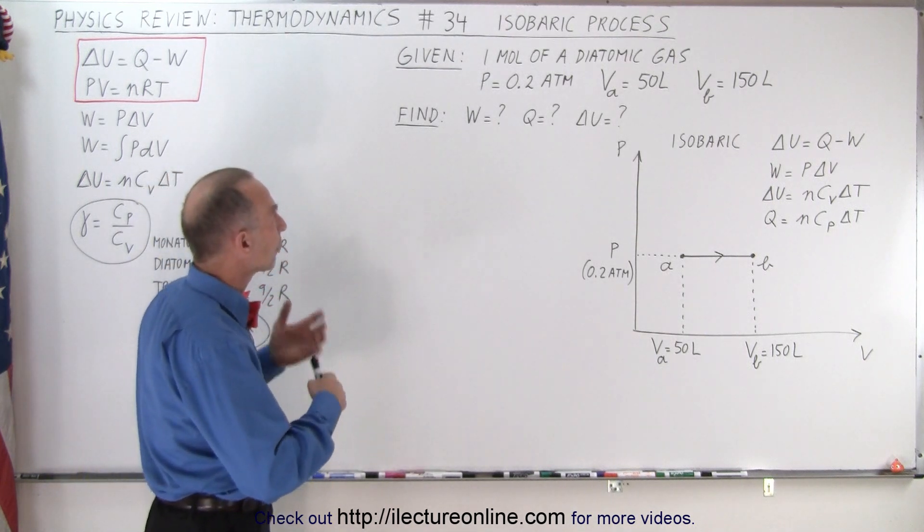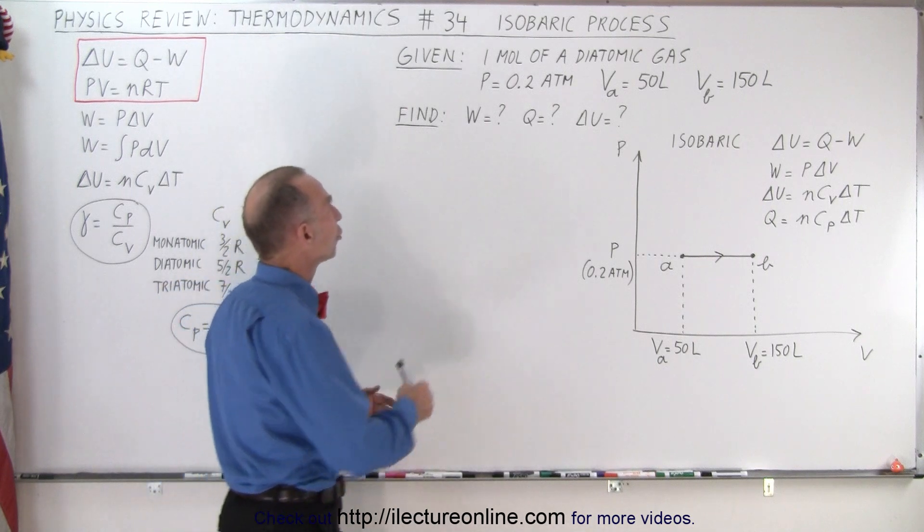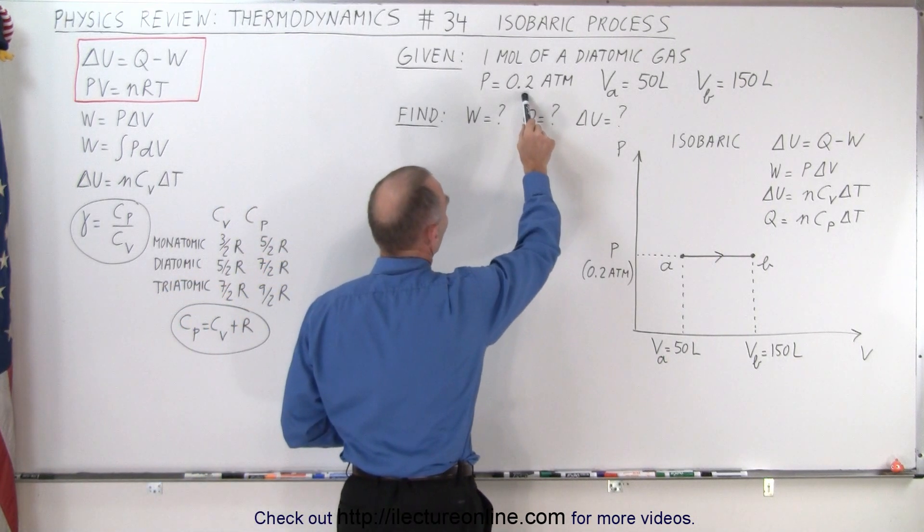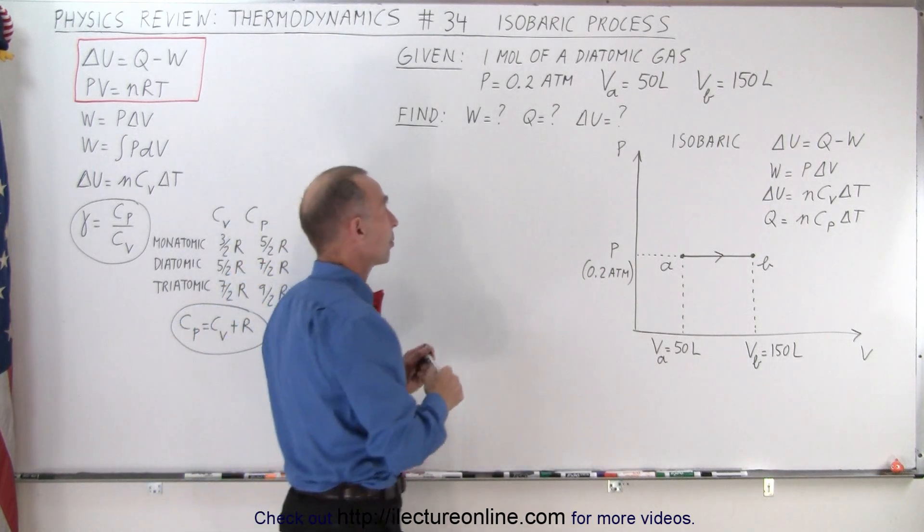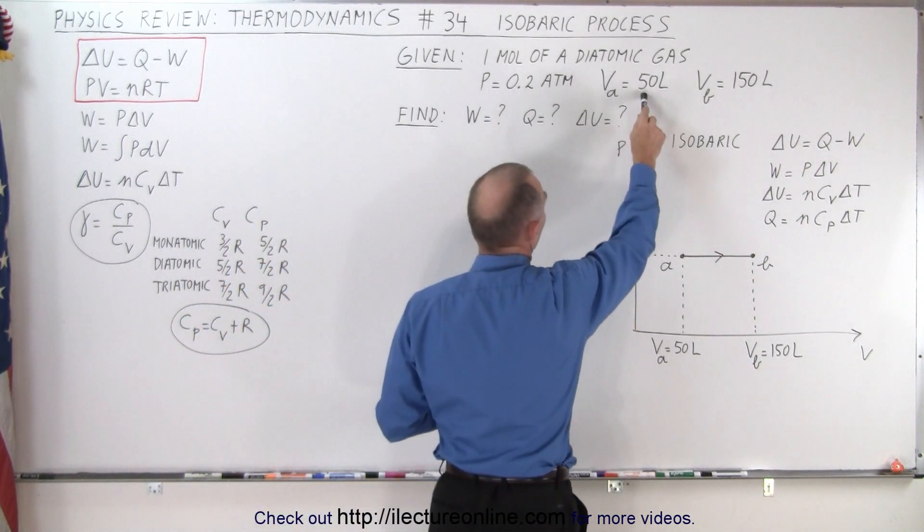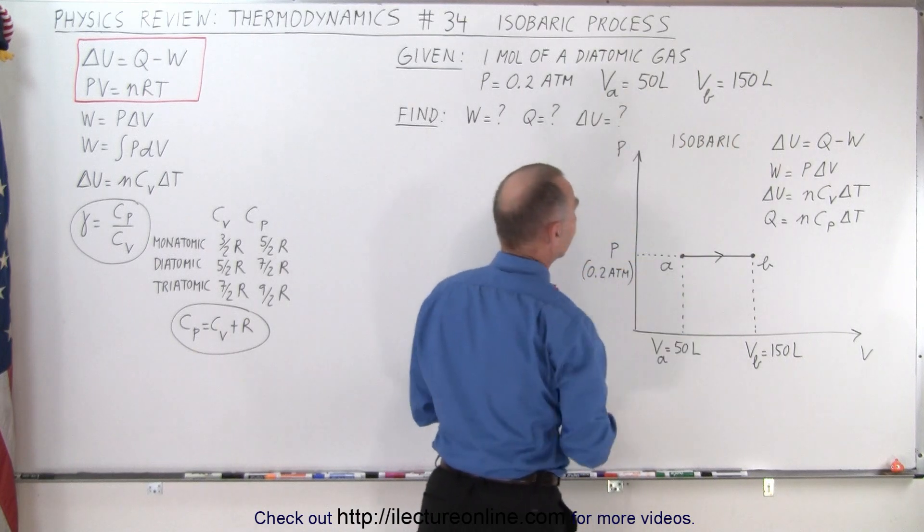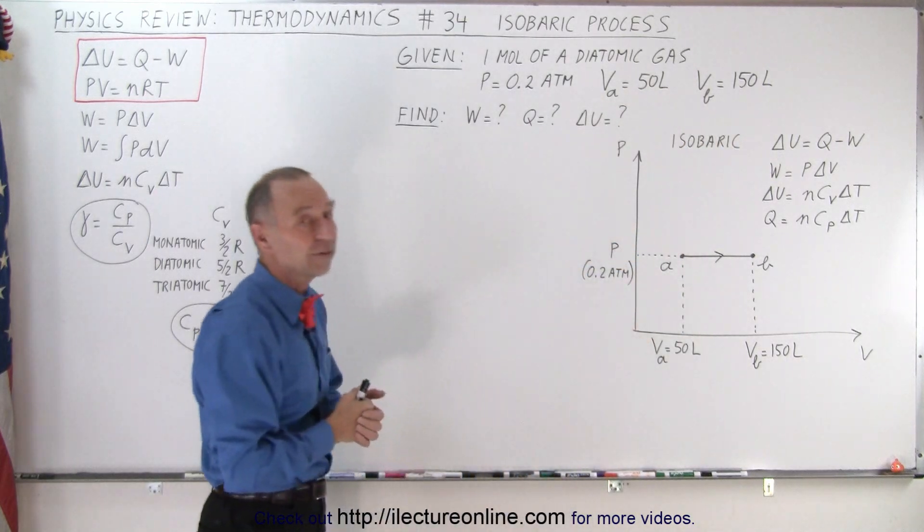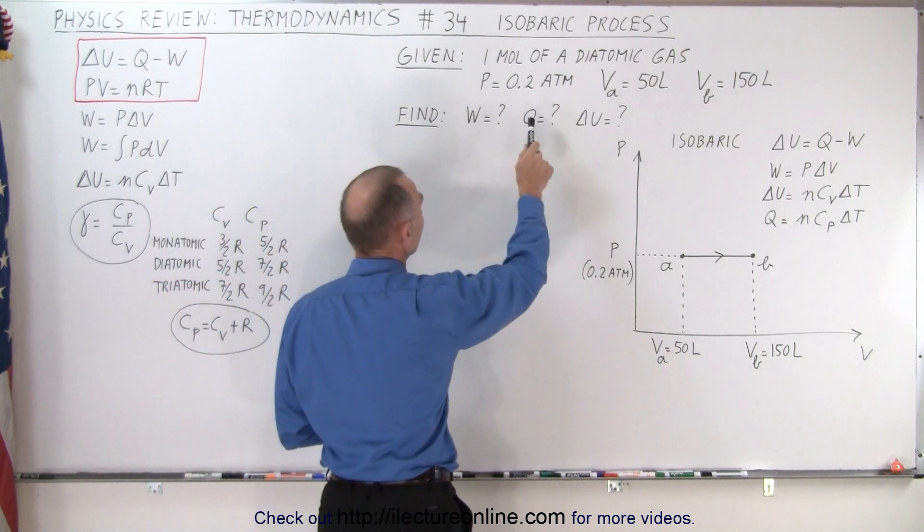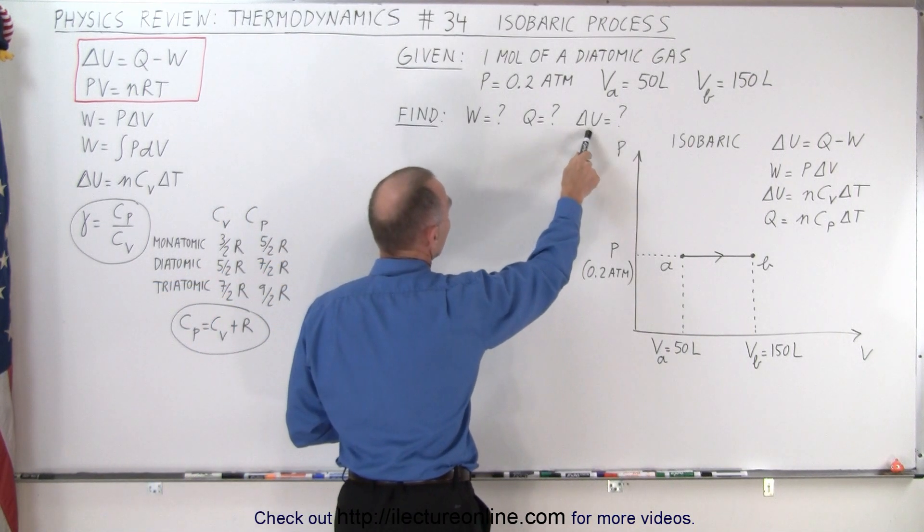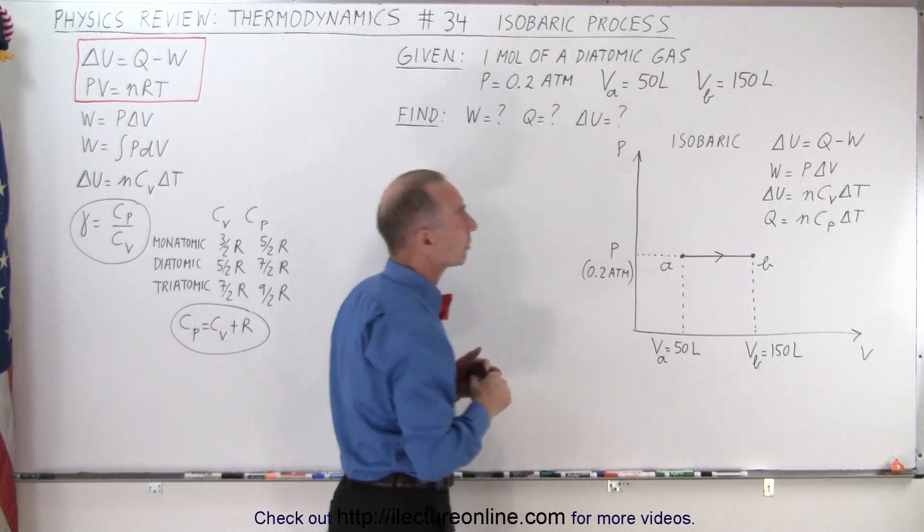The problem we're given is that there's one mole of a diatomic gas. The pressure is at 0.2 atmosphere, which will not change because it's isobaric, meaning pressure remains constant. We start at a volume of 50 liters and the gas expands to a volume of 150 liters, three times the original volume. We want to find the work done by the gas, the heat added to the gas, and the change of the internal energy of the gas.